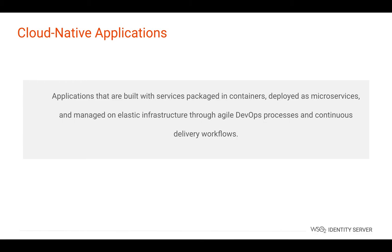However, the world is now heading towards microservices, where instead of having one thick server, the architecture has small modularized services. With cloud-native applications, you can create applications that are built with services, packaged in containers, deployed as microservices, and managed on elastic infrastructure through agile DevOps processes and continuous delivery workflows. With this architecture, you can easily deploy and go into production.